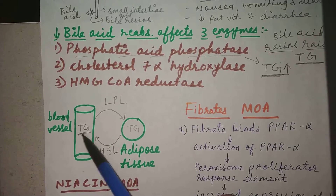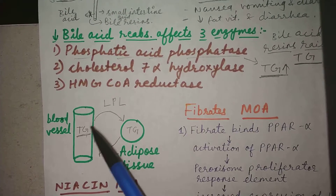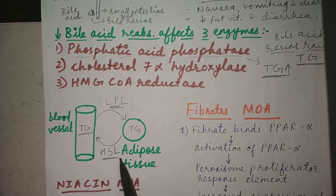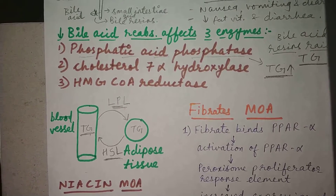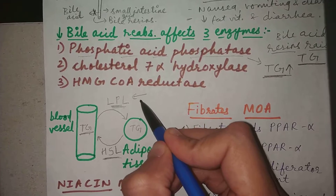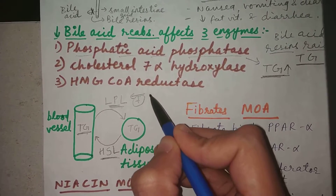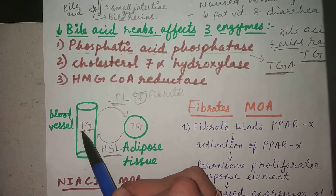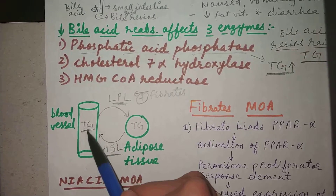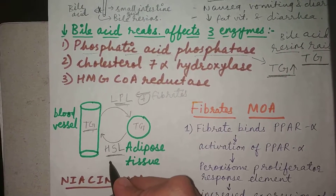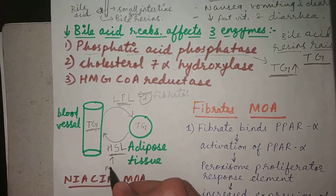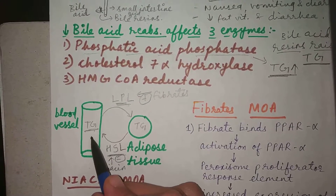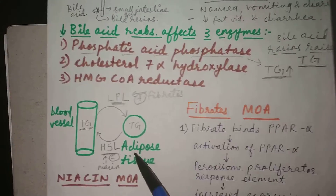By common sense, to decrease triglyceride levels in the blood, we should either increase the activity of lipoprotein lipase or decrease the activity of hormone-sensitive lipase. That's exactly what fibrates and niacin do. Fibrates increase the activity of lipoprotein lipase, transferring more triglyceride from the blood to adipose tissue. Niacin does the opposite — it inhibits hormone-sensitive lipase, reducing triglyceride in the blood.